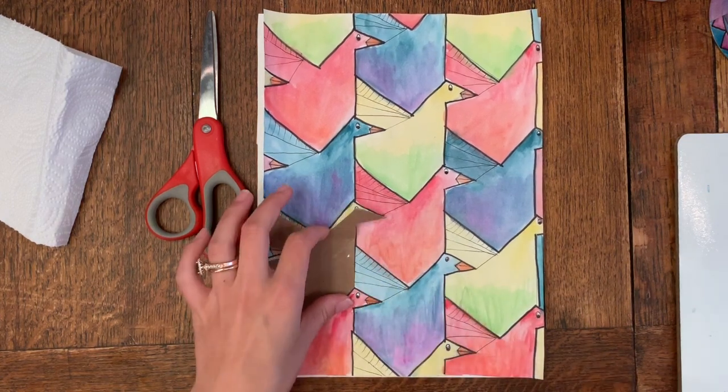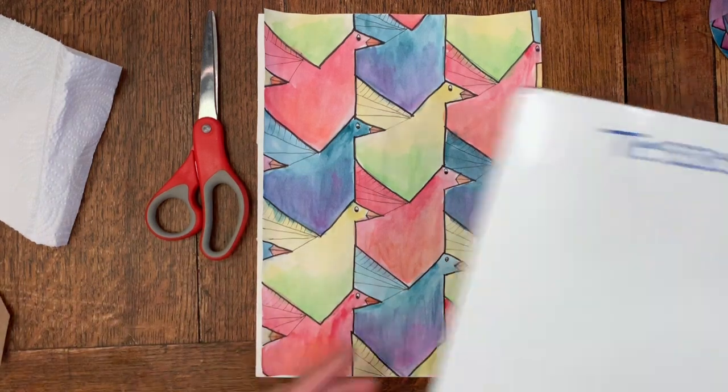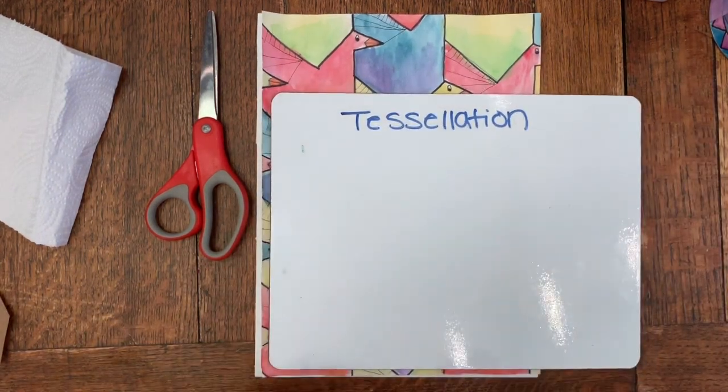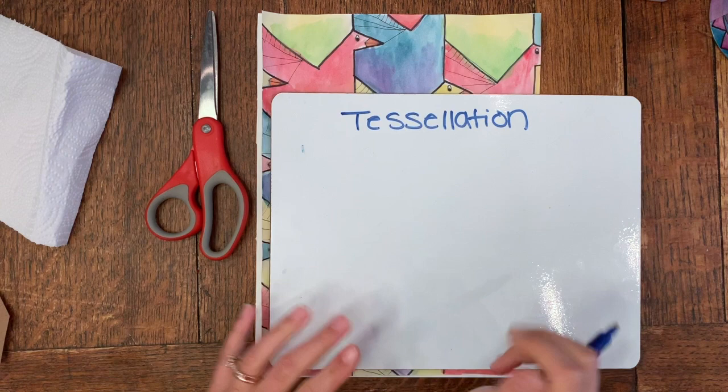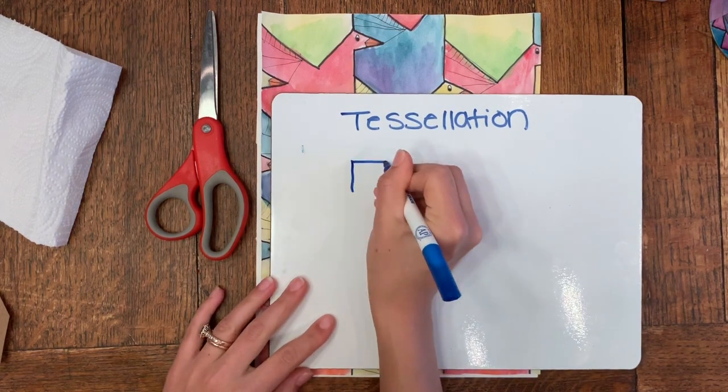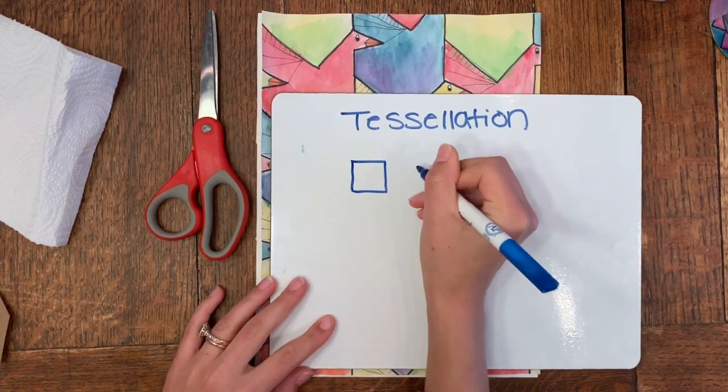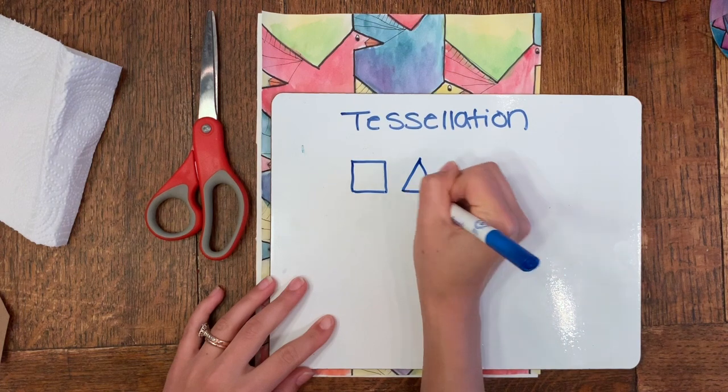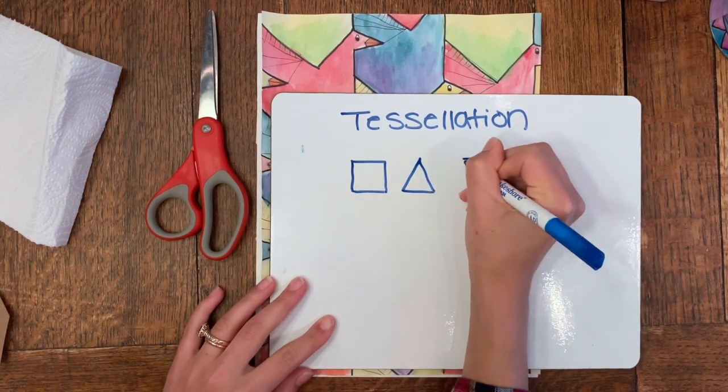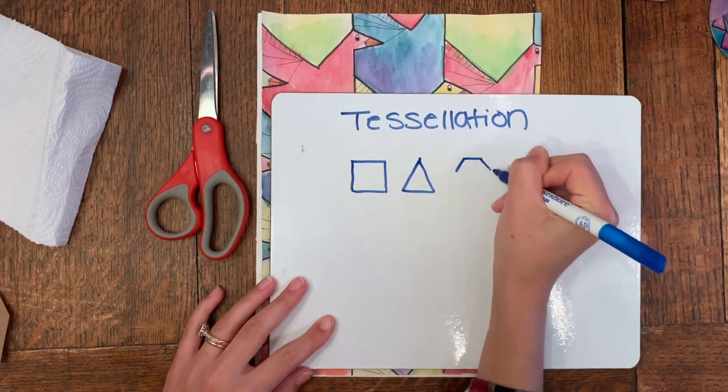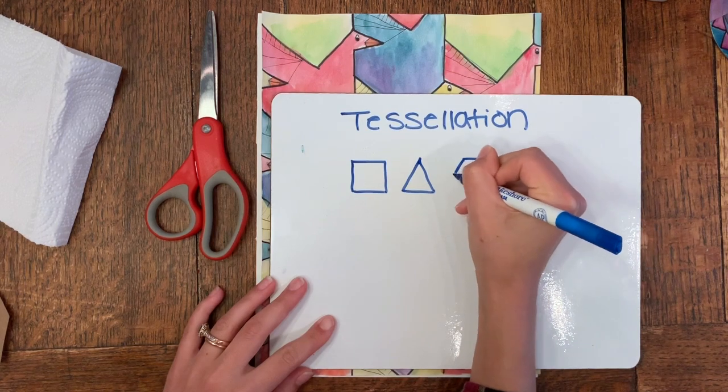In geometry, there are three naturally tessellating shapes: the square, the triangle, and the hexagon. The hexagon has six sides.